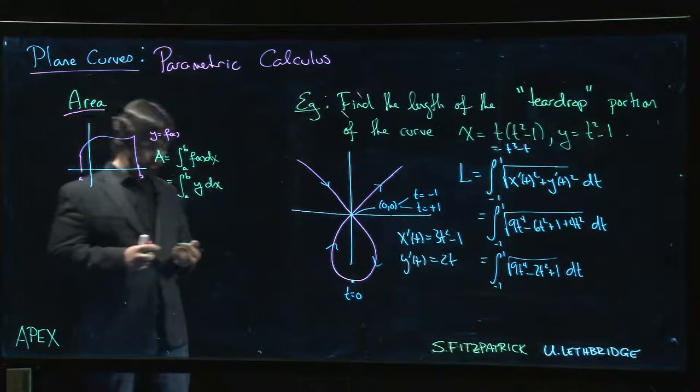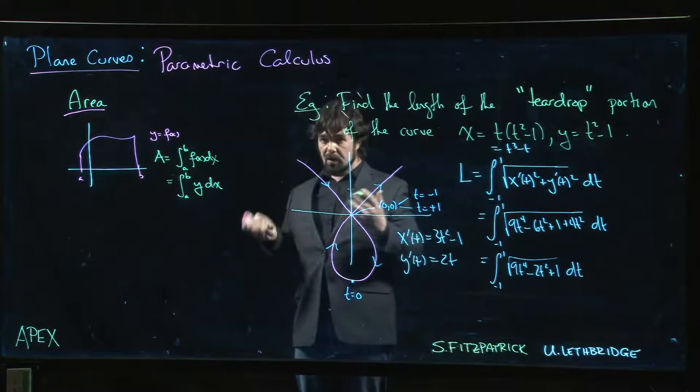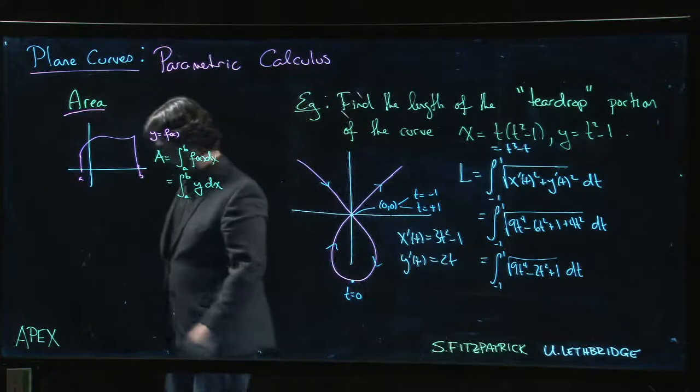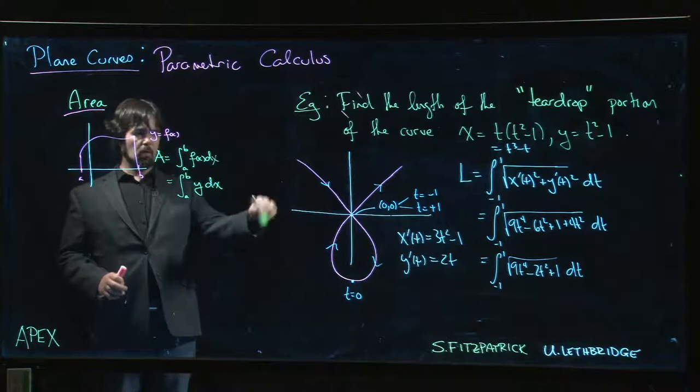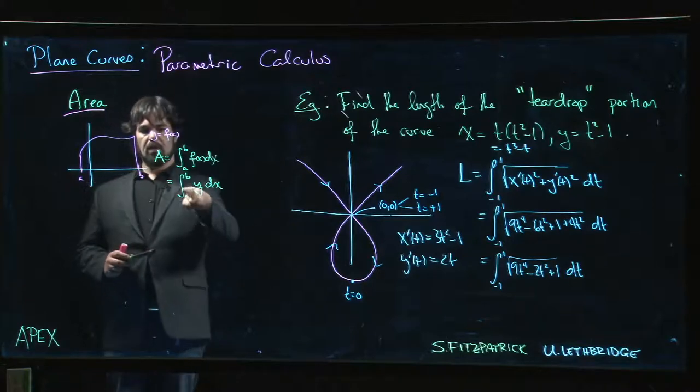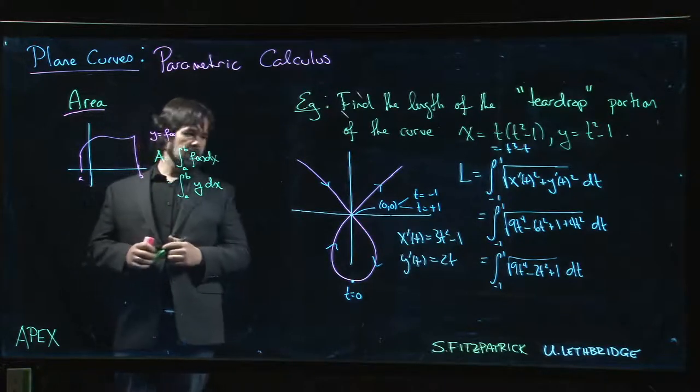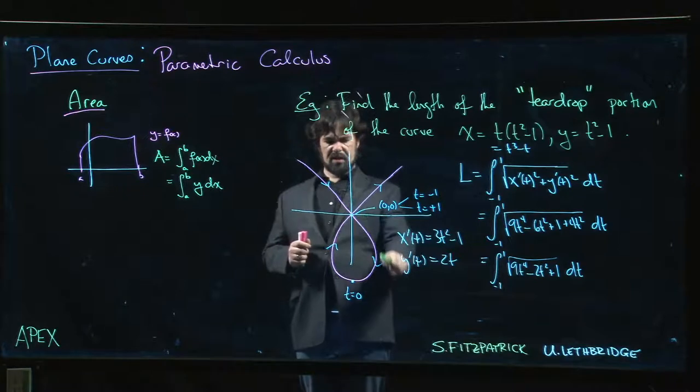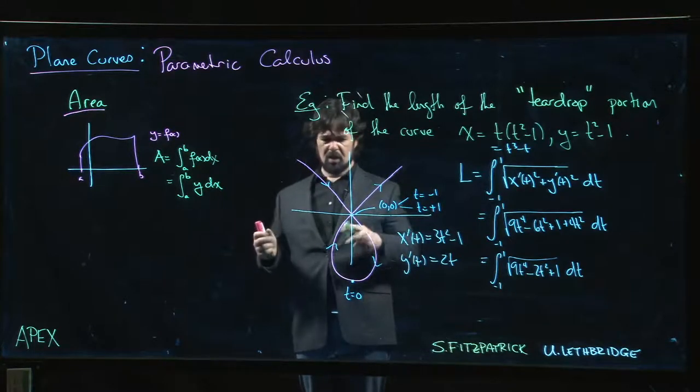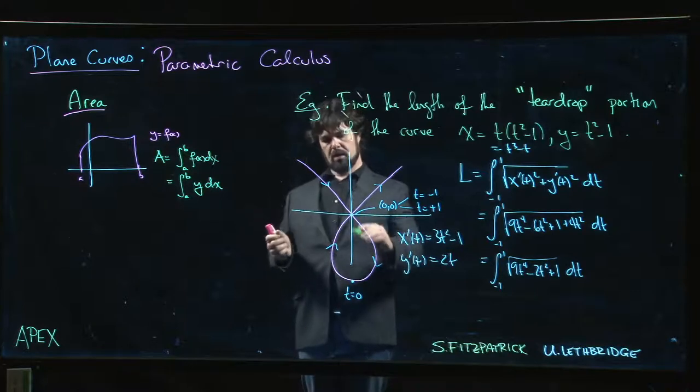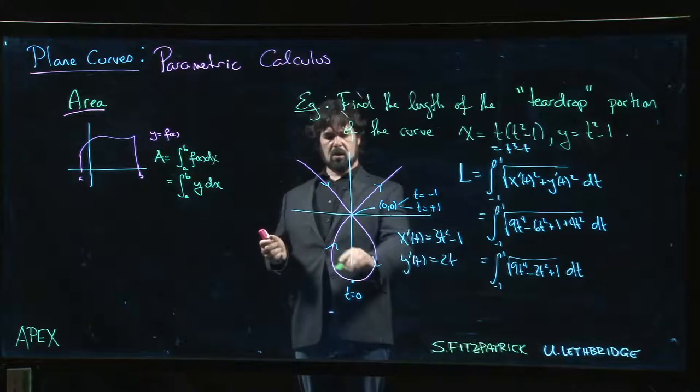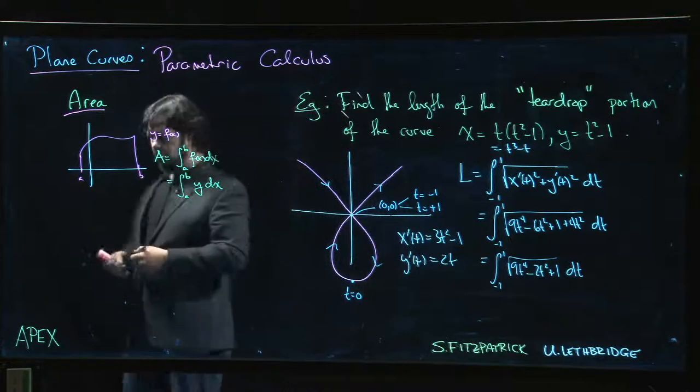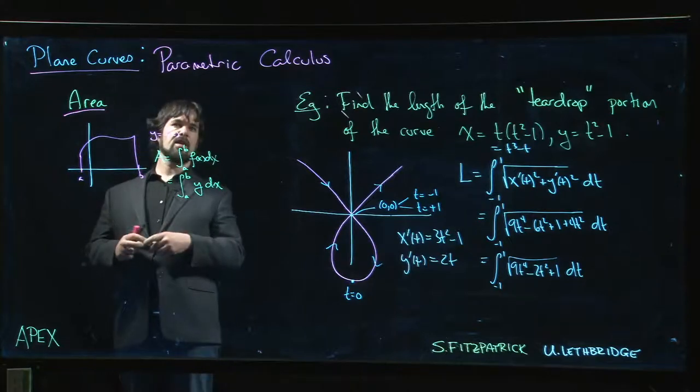We know what this looks like. Area is the integral from a to b of f(x) dx, which we might alternatively write as simply y times dx. Now turns out you can basically use the exact same formula for parametric curves. The only problem is you got to be careful about which way you're going around because you might get a minus sign. The typical orientation that we take is usually counterclockwise.